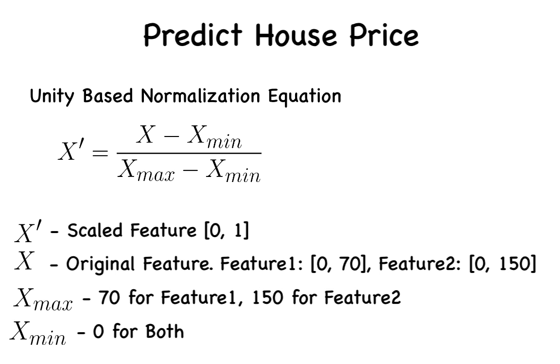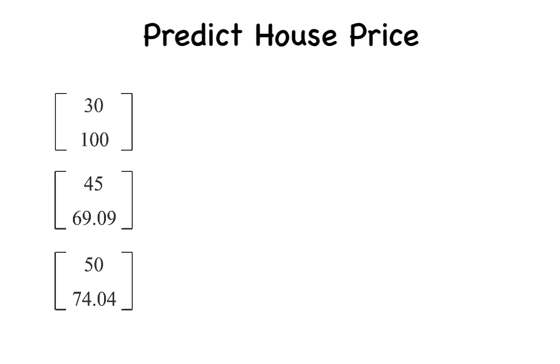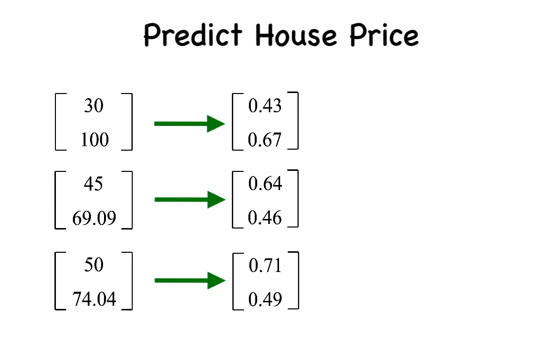So, by substituting the value of x min as 0, the formula for feature scaling reduces to x bar is equal to x by x max. Applying these values to the three house samples above, we get new vectors where all features lie between 0 and 1.